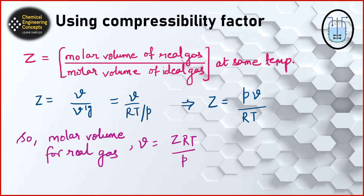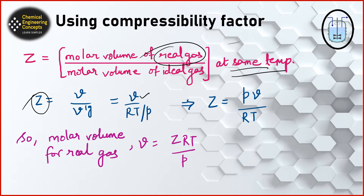First we should define what the compressibility factor is. It is basically the ratio of the molar volume of the real gas divided by the molar volume of the ideal gas, both calculated at the same temperature. That is, real volume divided by ideal volume of the gas, and that is known as the compressibility factor, denoted by capital Z. The denominator can be replaced using the ideal gas relation V = RT/P, giving us the working formula for Z.